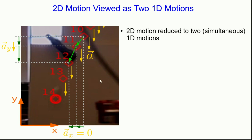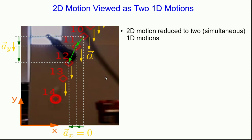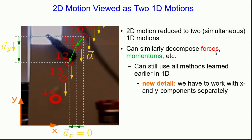We can think of this 2D motion as being made out of these two 1D motions going on at the same time, reducing the 2D problem to two 1D problems. We can similarly decompose forces, momenta, and any other vector. All of the methods we've learned to think about 1D motions we can still use, with the one new detail that we have to work with the x and y components separately. Also, we don't always have to decompose vectors into components parallel to the axes — sometimes other decompositions give useful insights.